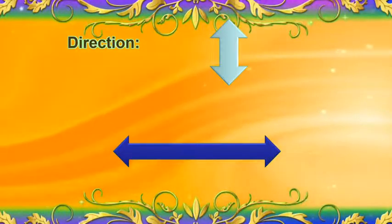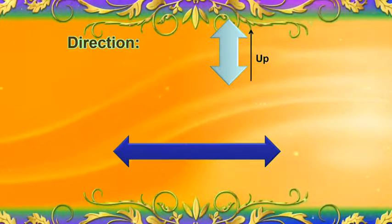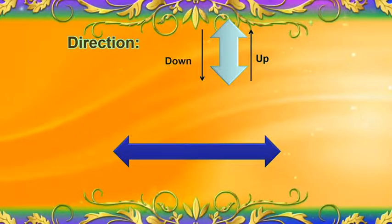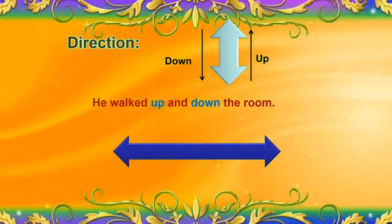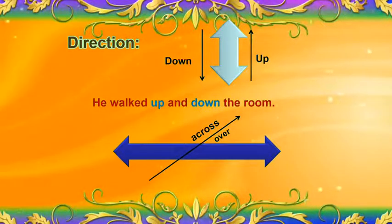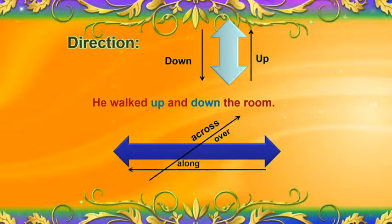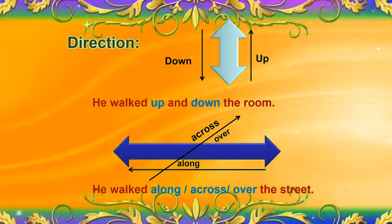We can use prepositions to show directions also, such as up and down. He walked up and down the room. Similarly, across, over, and along: he walked along, across, or over the streets.